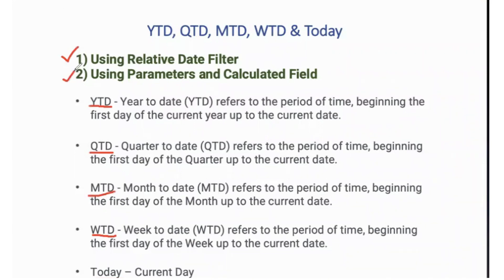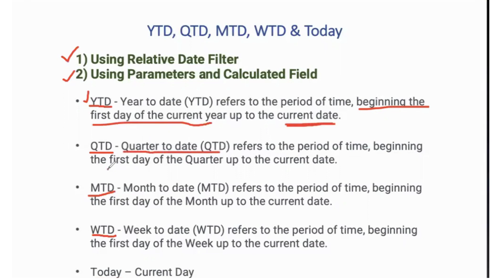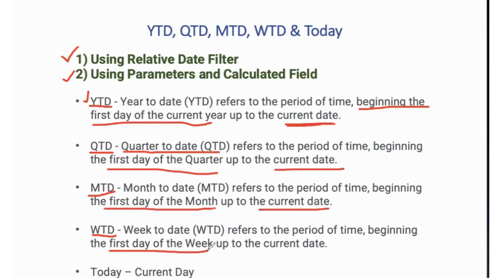YTD is nothing but showing the performance or statistics of a business from the beginning of the year — from the first day of the current year up to today. Similarly, quarter to date is from the beginning of the quarter up to the current date. Month to date is from the beginning of that particular month up to the current date. Week to date is from the beginning of that particular week up to the current date.